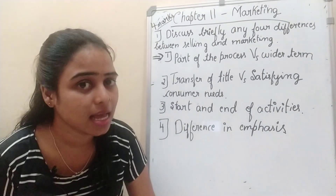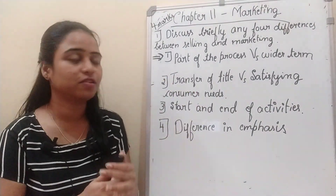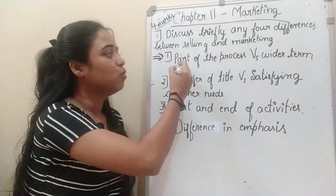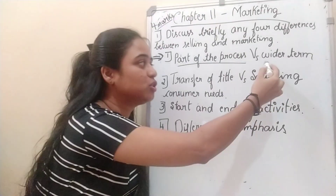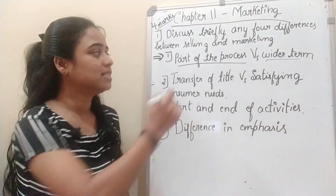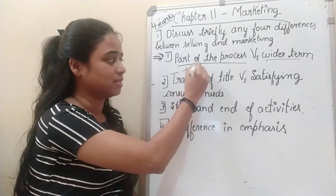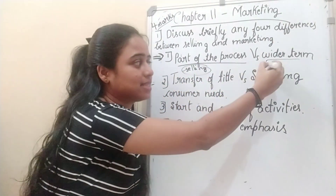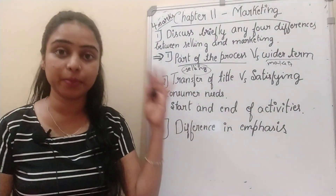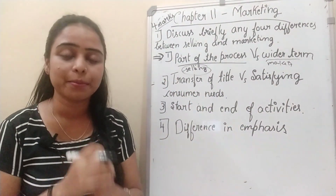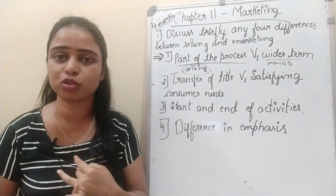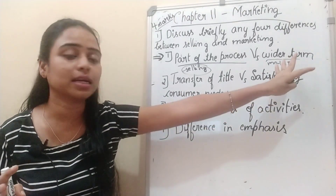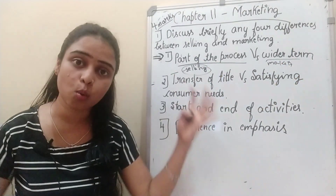The first difference is part of the process versus wider term. Selling is just a part of the process, whereas marketing is a wider term — it is a bigger concept because it includes different things like promotional activities, advertising, publicity, and after-sale services. So marketing is a wider term whereas selling is just a part of the process.